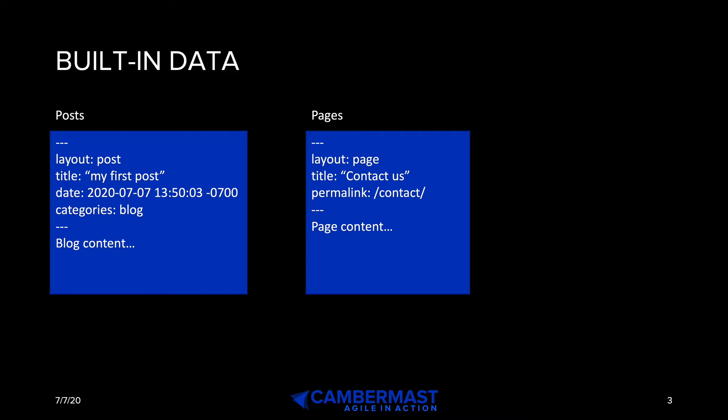Just like posts, you can also have pages. A blog post is more like an article that you wrote, whereas a page is more static — it might say, here's our list of services or here's how to contact us. But you can still use built-in querying in Jekyll without having to create your own database of pages. You can just say, for all the pages on my site, find the one titled contact us, and you can get that information programmatically.